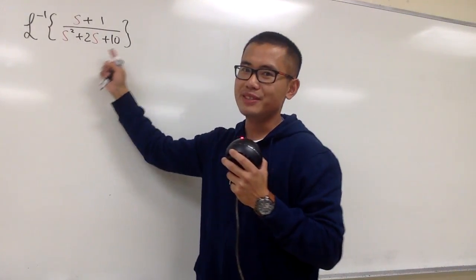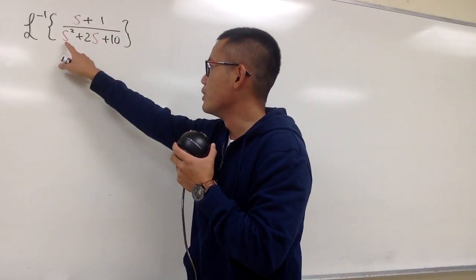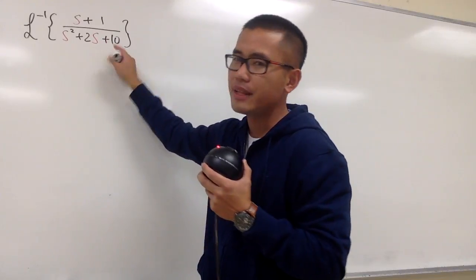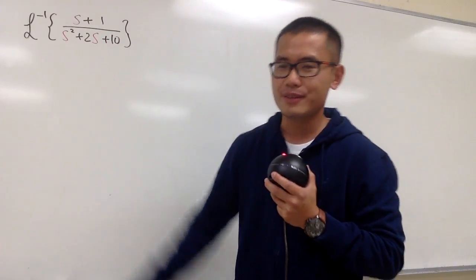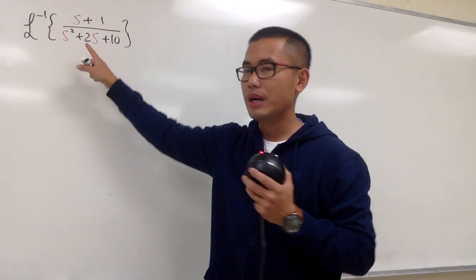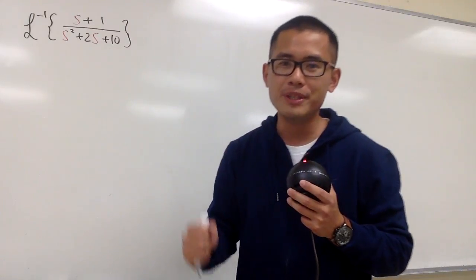All right, we're going to figure out the inverse Laplace transform of this right here. And as you can see on the bottom, we have s squared plus 2s plus 10. We cannot factor that. And the way that we are going to handle this is to do completing the square.